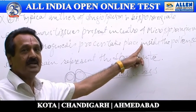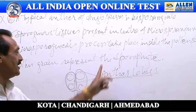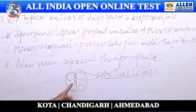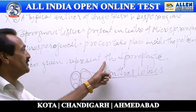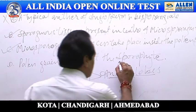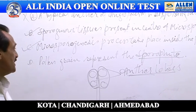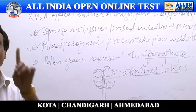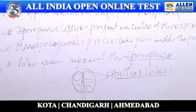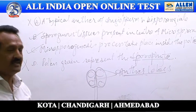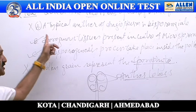Statement C: microsporogenesis process takes place inside the pollen sacs — this is obvious, so this statement is also correct. Statement D: pollen grains represent the sporophyte. In place of sporophyte, pollen grains represent the gametophyte, so this statement is incorrect.